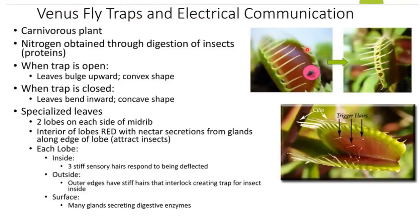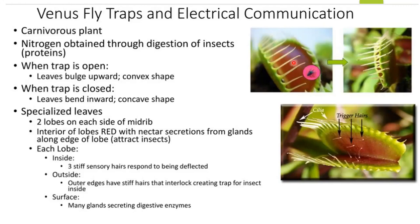Venus fly traps are called carnivorous plants. They can undergo photosynthesis and make their own food, but they live in environments where the soil is deficient in nitrogen. To overcome this deficiency, they use insects or other small animals as a source of protein. The interior of the trap is convex and red to attract insects, but once it closes the shape becomes concave.